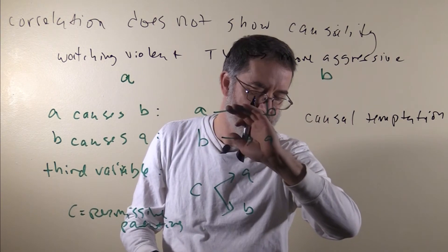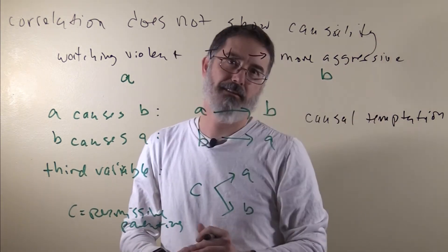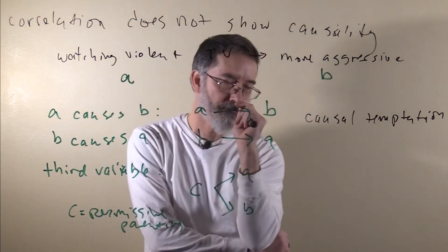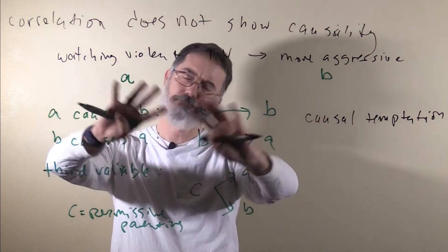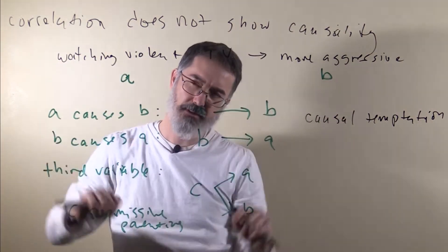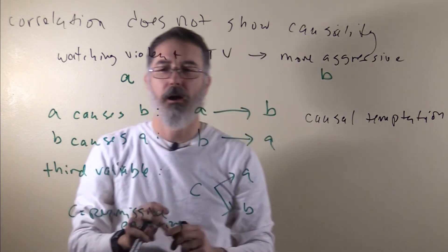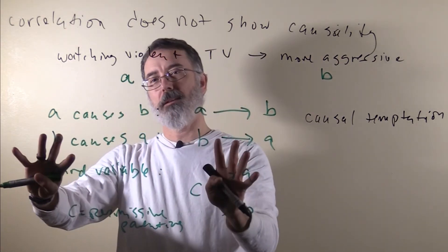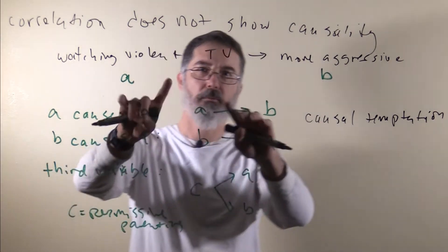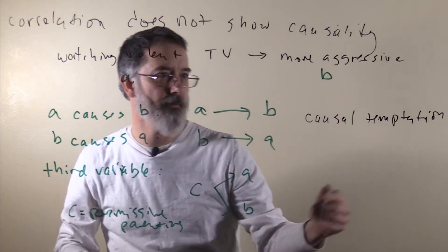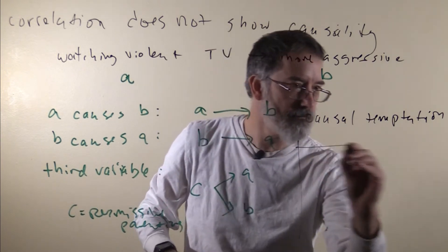Do not succumb to the causal temptation. So if you have a positive correlation or a negative correlation, if you have an observed correlation that you are trying to explain, and you are trying to figure out all the different ways that causality could relate to the observed correlation. So we have violent TV and aggressive kids.